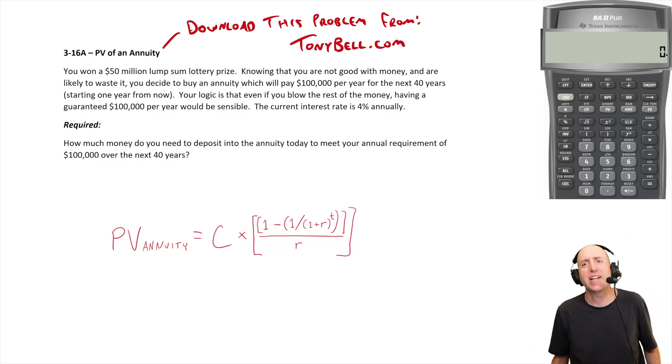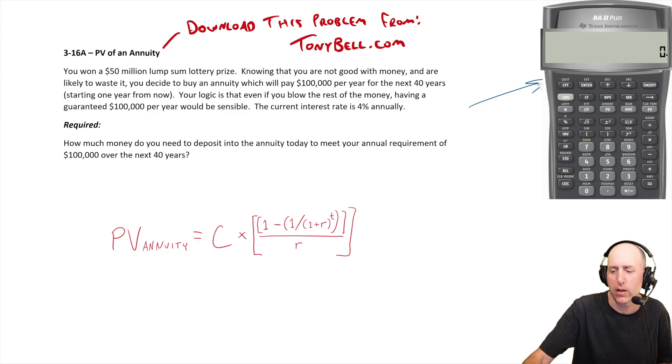Let's take a look at problem 316, a present value of an annuity problem. You can see I've got the formula ready to go. We'll solve it first with a formula, then we'll solve it with our fancy financial calculator.